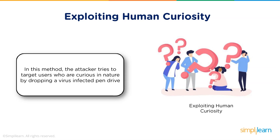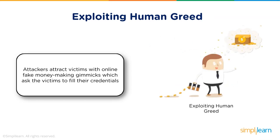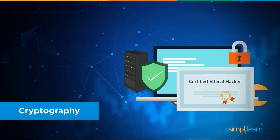Exploiting human curiosity is another attack vector — hackers leave USB pen drives in parking lots with trojans pre-installed on them. Curious people who pick them up and plug them into their computers will unknowingly trigger the virus or trojan to infect their machine. Exploiting human greed refers to attacks like Nigerian frauds and fake lotteries — fake money-making gimmicks that prey on a person's greed, making them click on links in order to receive the money promised in those emails.